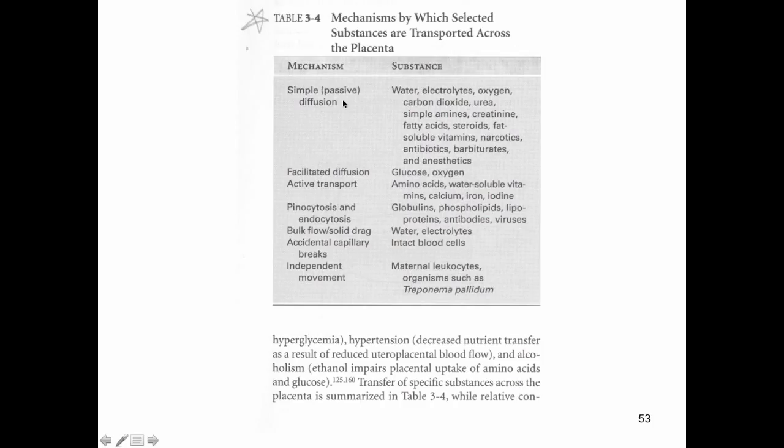If we consider some of the substances that tend to cross the placental barrier, they will cross via very particular transport mechanisms. Passive diffusion, simple diffusion: the substances that are going to cross in this way are water, electrolytes, oxygen, carbon dioxide, urea, amines, fat soluble vitamins, which you can imagine all of these things are intended to cross, narcotics, antibiotics, barbiturates, anesthetics. Those are going to be things that mom's taking that you may not want it to cross, but it certainly will because they're lipid soluble. For these things to cross the placenta into the baby, there just has to be a concentration gradient for it.